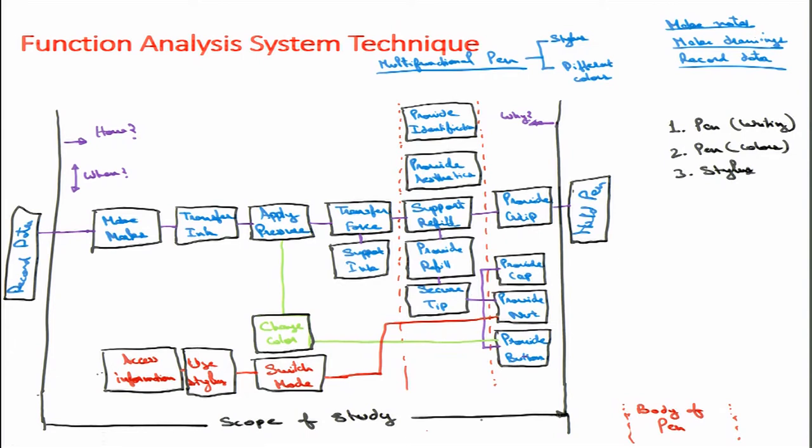So we have seen the FAST diagram for a multifunctional pen where the basic function is writing, the second function is providing colors, and the third function is the stylus. I would say 'multipurpose' — the word 'function' is what we are defining; each of them is a function actually.